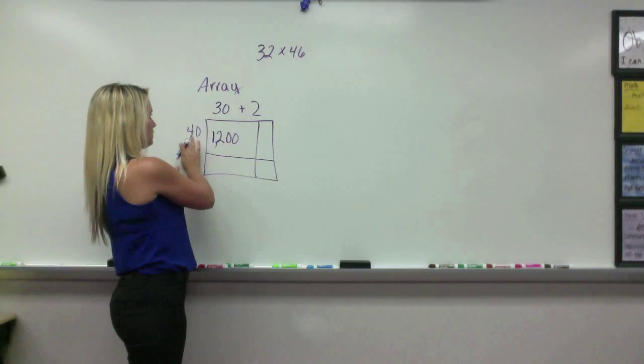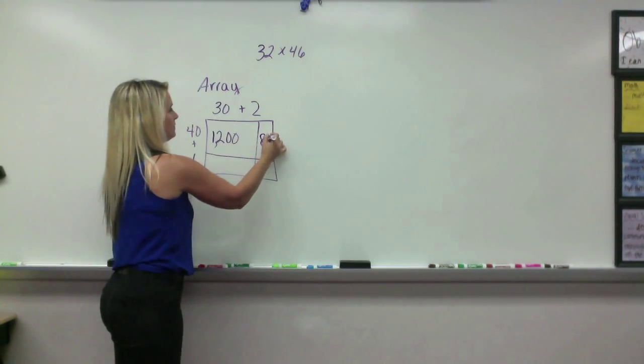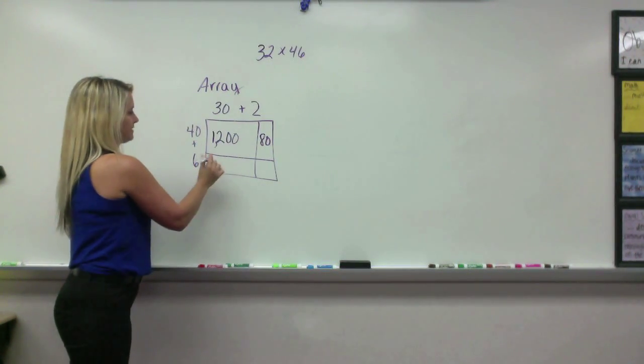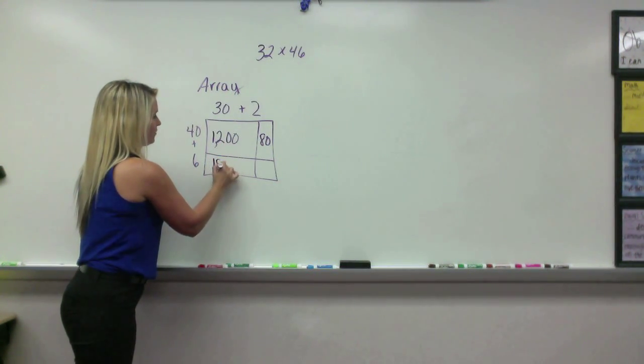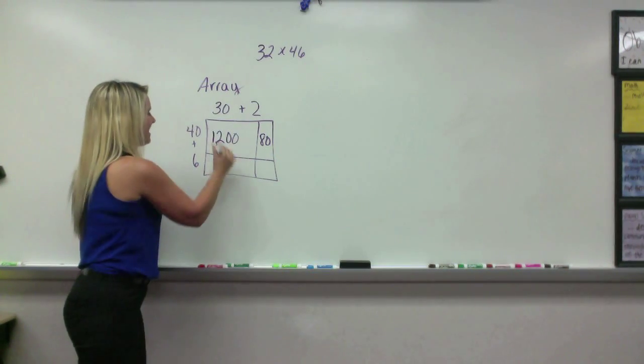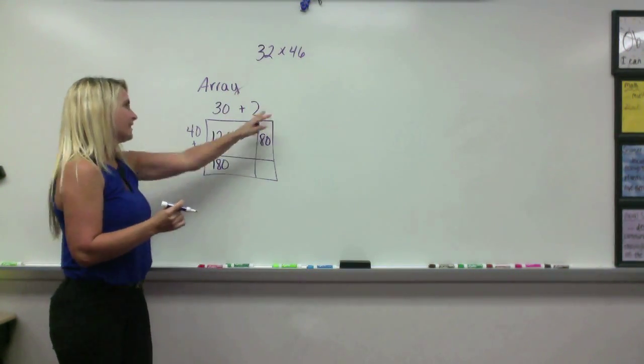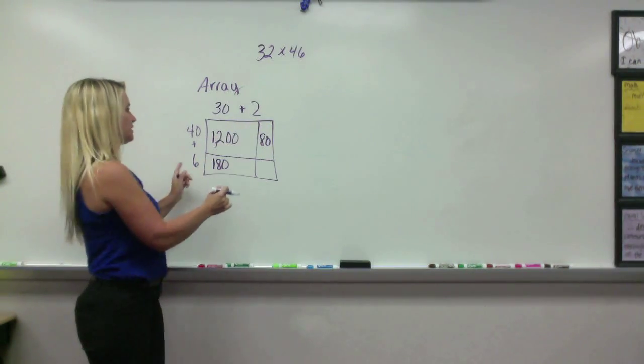So this one will be 2 times 4, which is 8, and add the one zero at the end because we're multiplying by tens. 30 times 6, so 3 times 6 is 18, add the zero from the 30 is 180, and then the last one is going to be 2 times 6.